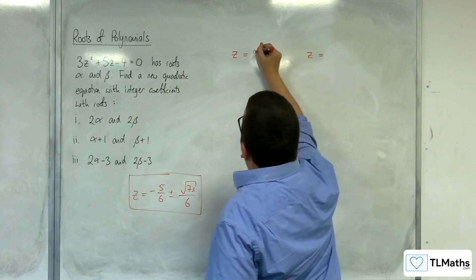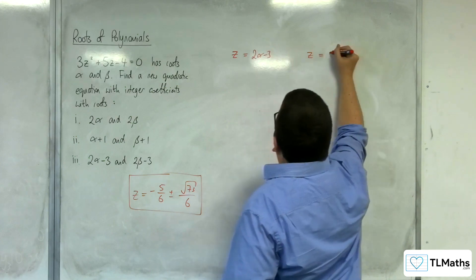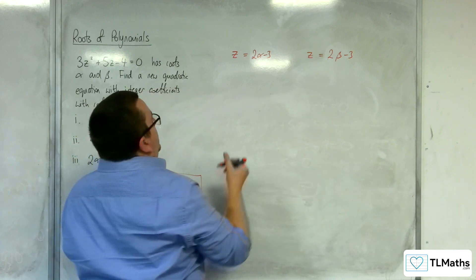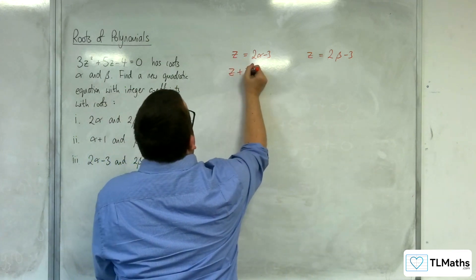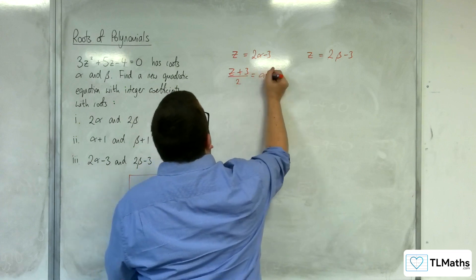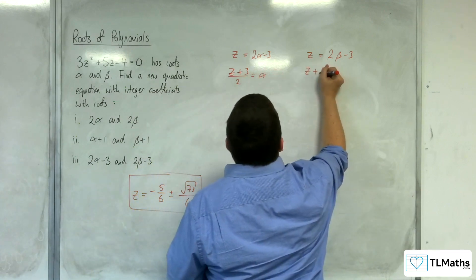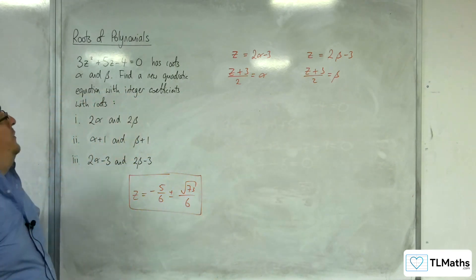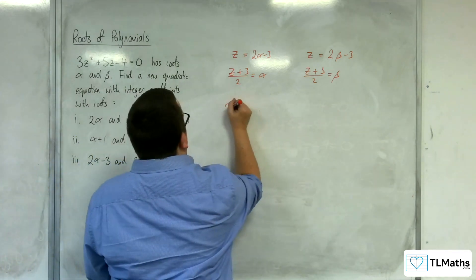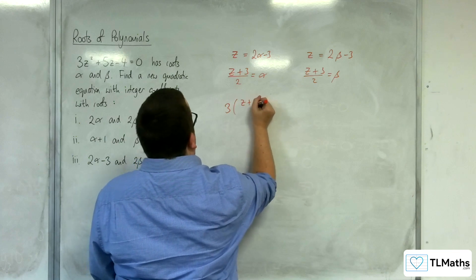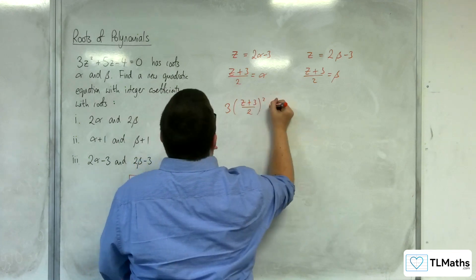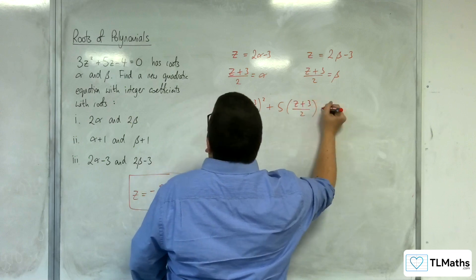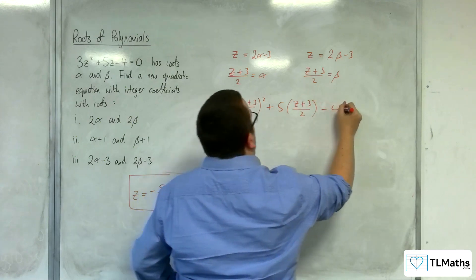Let's look at the last one. So we've got 2 alpha take away 3 and 2 beta take away 3. So if we rearrange these, you'll get z plus 3 over 2 equals alpha and z plus 3 over 2 equals beta. So if we replace the z with z plus 3 over 2, we've got 3 lots of z plus 3 over 2 squared plus 5 lots of z plus 3 over 2, take away 4 equals 0.